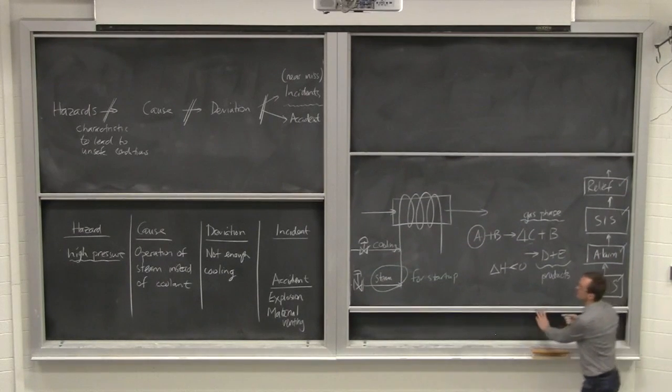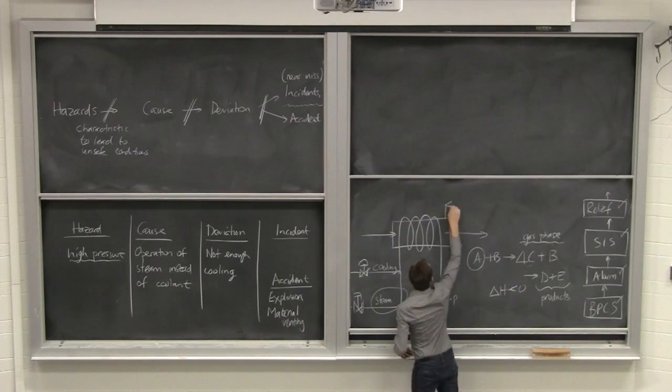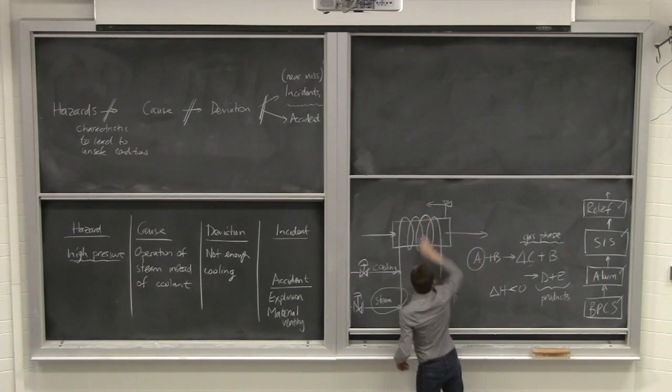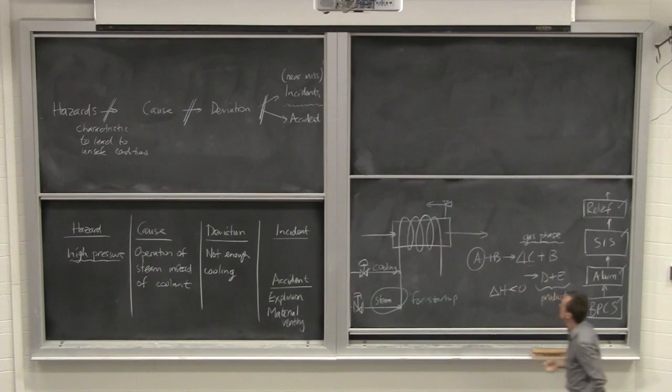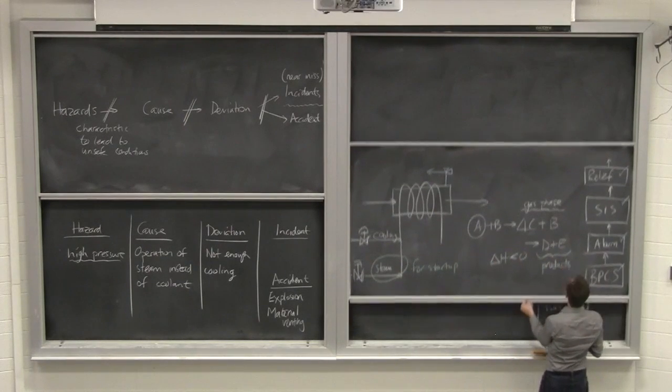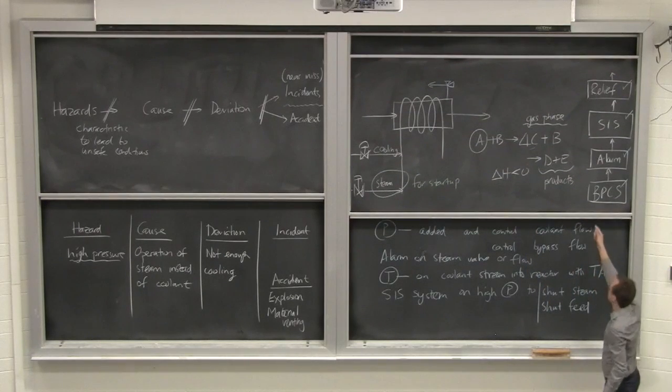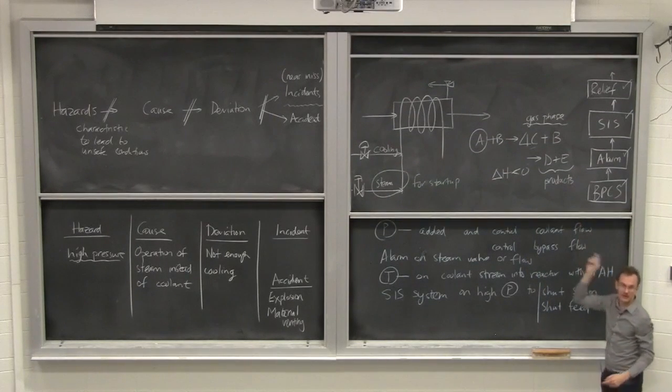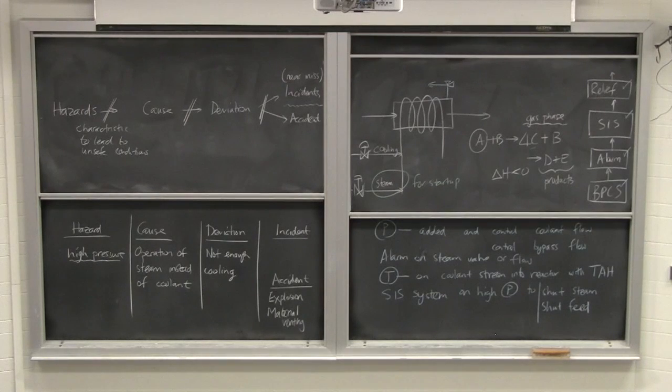So right now, we don't have relief on here. So we could have that relieved. We could look at SIS, as was just suggested, alarms, and basic process control. All of those four could have been used to try and mitigate the issue. We could have done something a little bit better as well, or at least looked at investigating it, and that is trying to avoid and make the process intrinsically safe.